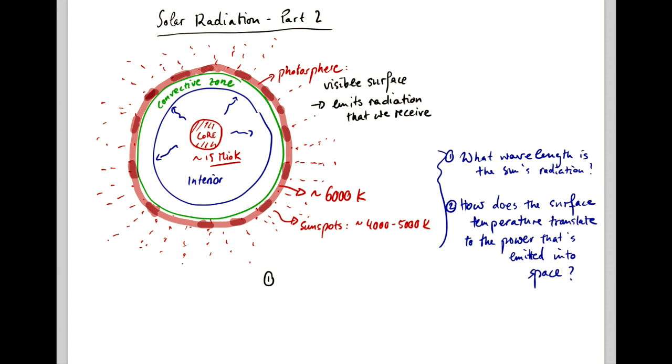Number one is Wien's displacement law, which gives us the wavelength lambda as a function of temperature. And the second law is the Stefan-Boltzmann law, which gives us solar forcing F as a function of temperature. And these two are what we'll look at next.